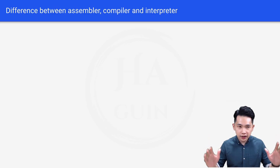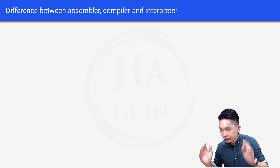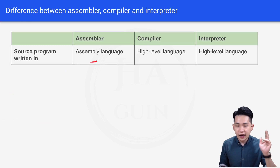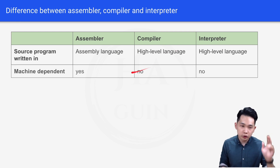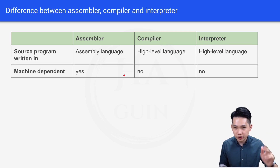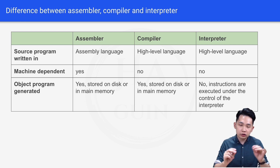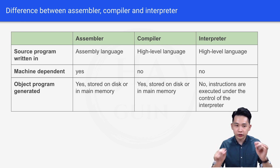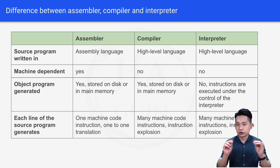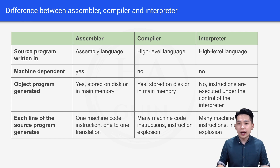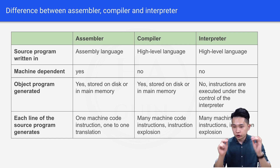Let's do a summary of the differences between assembler, compiler, and interpreter. The source program is written in assembly language for assemblers, and high level language for both compilers and interpreters. Regarding machine dependency: assemblers are machine dependent, while compilers and interpreters are not. Object code is generated and stored on disk or in main memory for assemblers and compilers, but not for interpreters — interpreter instructions are executed under its control. Finally, each line of assembly source code generates one machine code instruction (one-to-one translation), whereas compilers and interpreters generate many machine code instructions per line, known as instruction explosion.